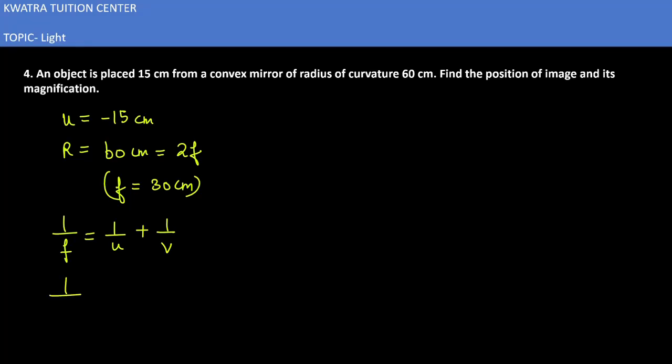So 1 over f, f value is equal to 30, u is equal to minus 15 and v value is unknown. So 1 over 30 is equal to 1 over minus 15 plus 1 over v.